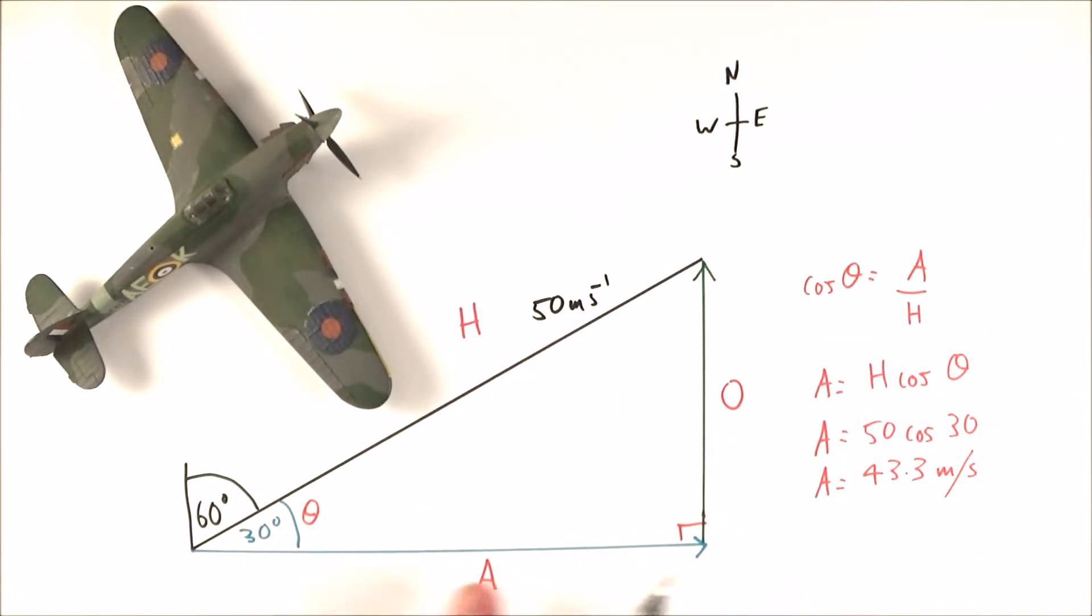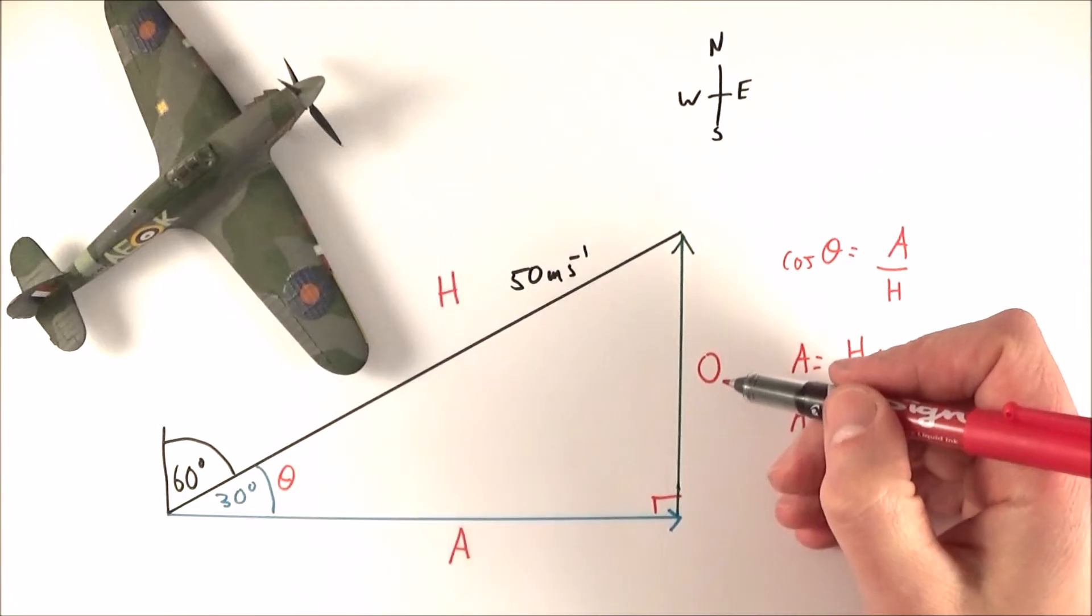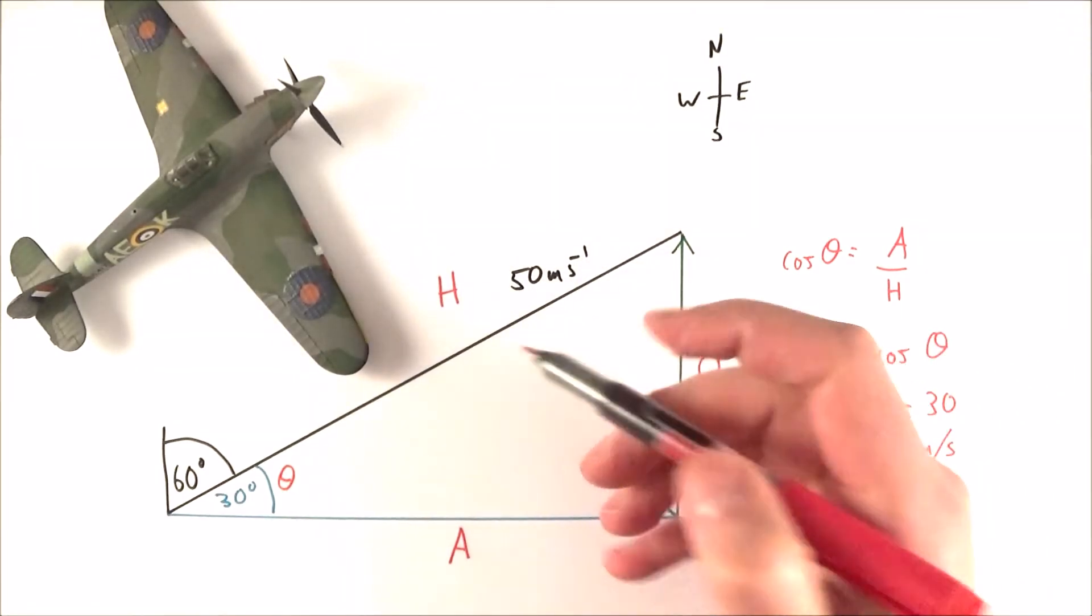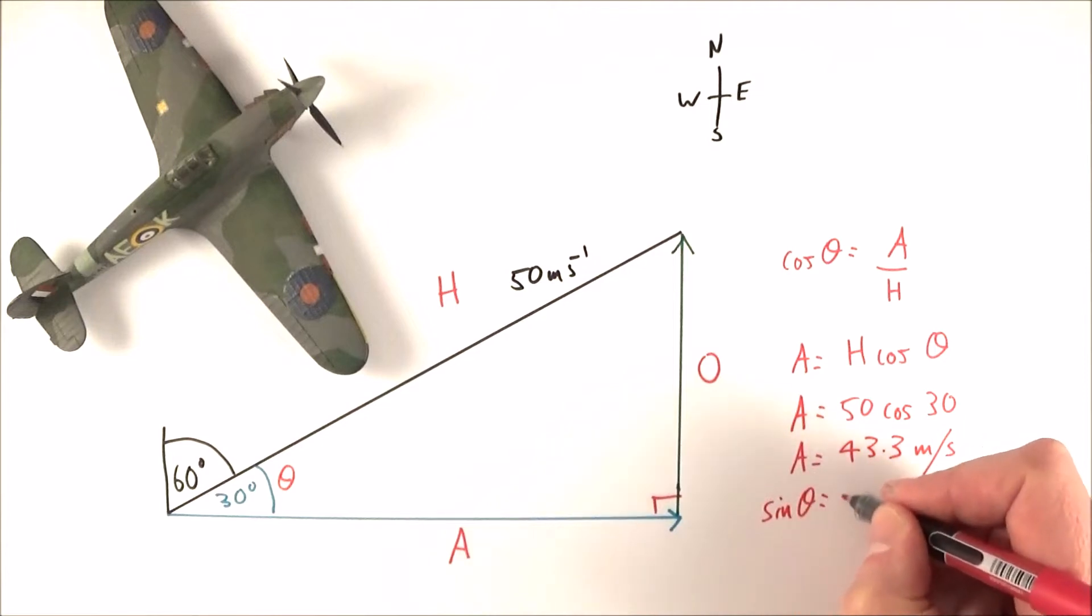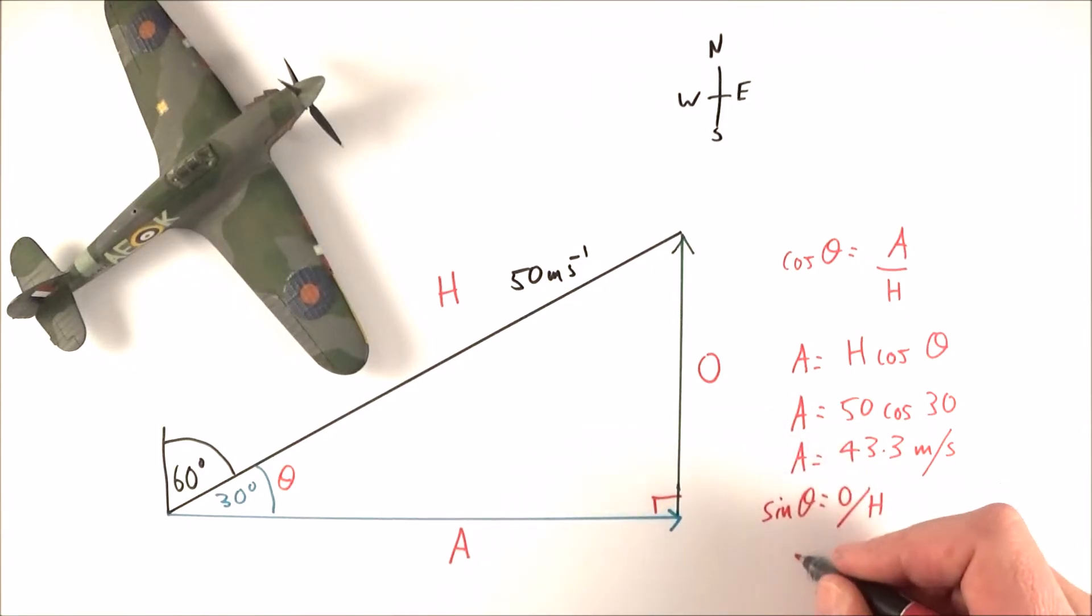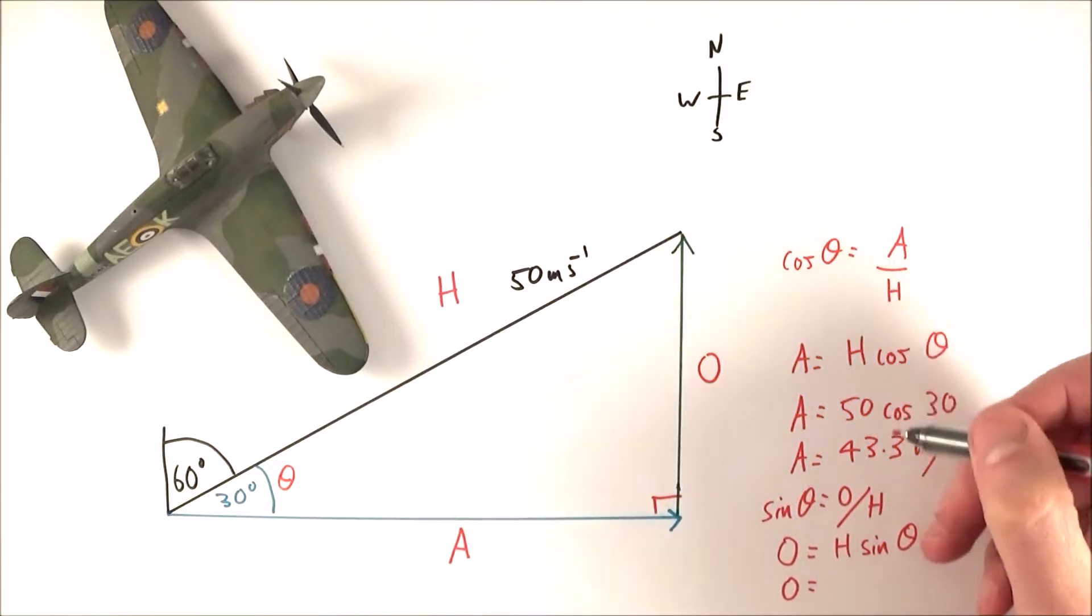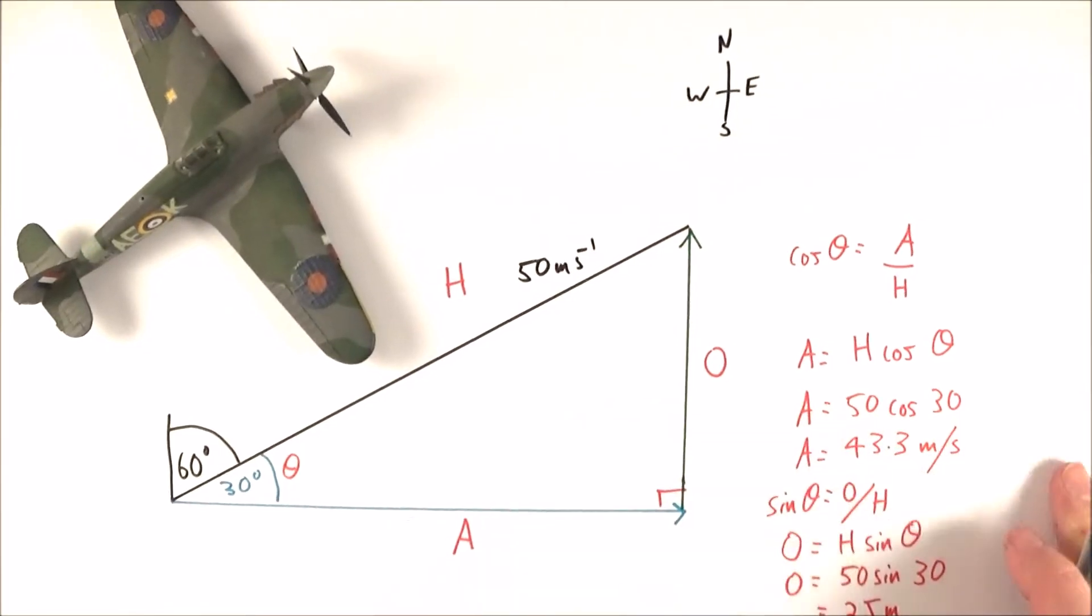So that means in one second it goes another 43.3 metres to the right. If I do the same looking at the length of this side up here, we've got the opposite side. And I know that by using sin theta is equal to the opposite side over the hypotenuse, I can rearrange that to make the opposite side the subject. So the length of that side is going to be equal to h sin theta. So the distance it goes vertically or the distance it goes to the north every second is going to be equal to 50 sin theta. So it goes 25 metres further north every second.